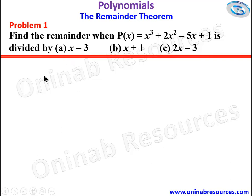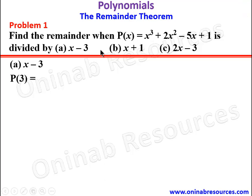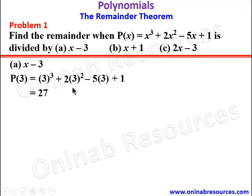Starting from a, we have x minus 3. We look for p of 3 — that is, equating x minus 3 to 0 gives x equals 3. So we substitute x equals 3: 3 cubed plus 2 times 3 squared minus 5 times 3 plus 1, which gives 27 plus 18 minus 15 plus 1. Simplifying, we have the remainder as 31.